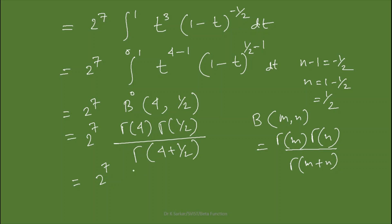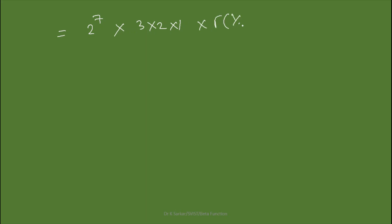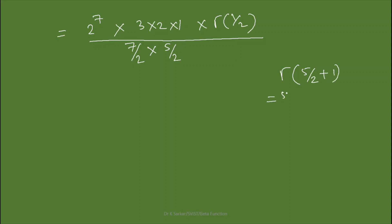So we have 2⁷ · Gamma(4) · Gamma(1/2) / Gamma(4 + 1/2). Since Gamma(n) = (n−1)!, Gamma(4) = 3! = 6. And Gamma(4 + 1/2) = Gamma(9/2). Now, Gamma(9/2) can be written as Gamma(7/2 + 1), so that is (7/2)·Gamma(7/2). And Gamma(7/2) = (5/2)·Gamma(5/2).